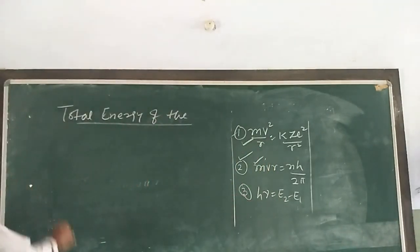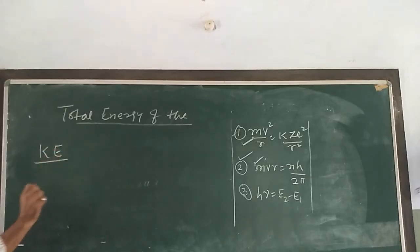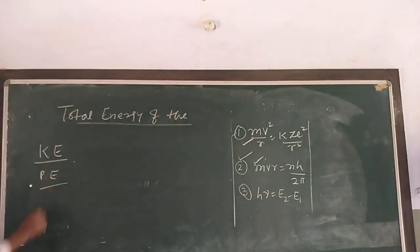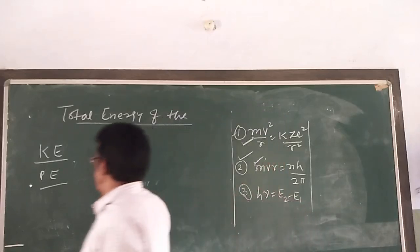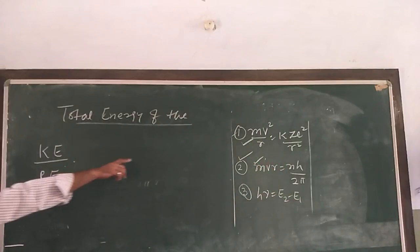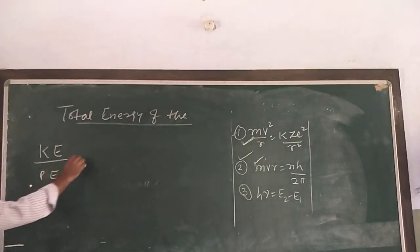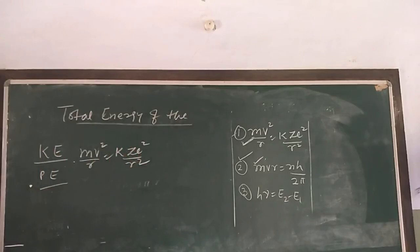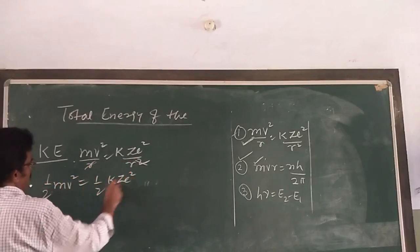The kinetic energy is due to the velocity of the electron, while the potential energy is due to the position of the electron. From the first postulate of Bohr's atomic model, mv²/r = kze²/r², so (1/2)mv² = kze²/(2r). This is the kinetic energy.